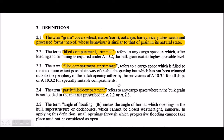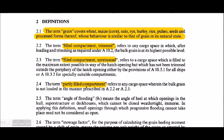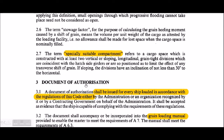The partly filled compartment definition is important. The specially suitable compartment refers to cargo spaces constructed with at least two vertical or sloping longitudinal grain-tight divisions which are coincident with the hatch side girders, or so positioned to limit the effect of any transfer or shifting of grain. If sloping, the divisions have an inclination of not less than 30 degrees to the horizontal.